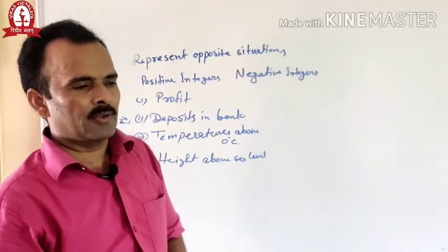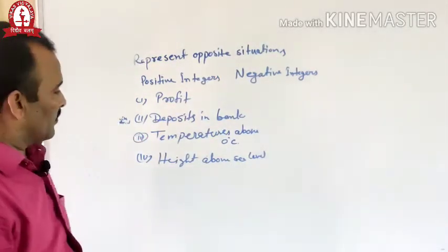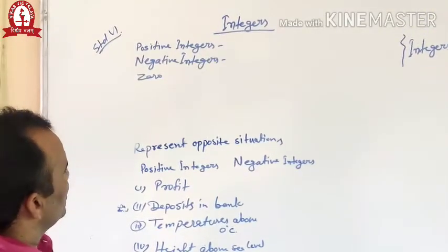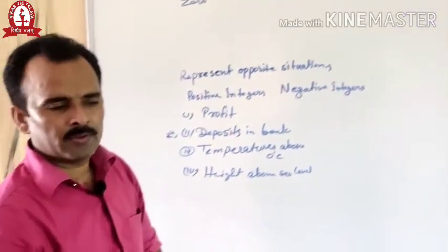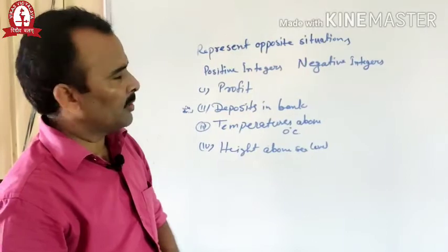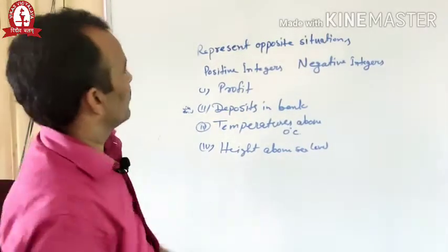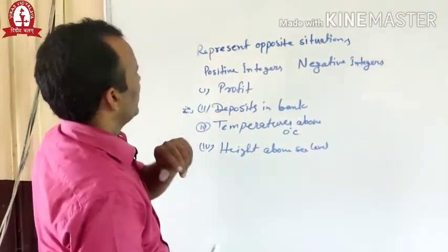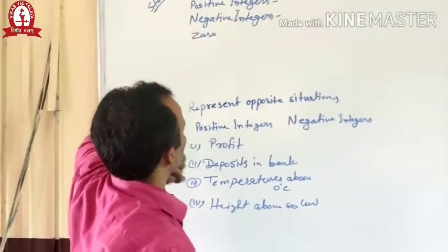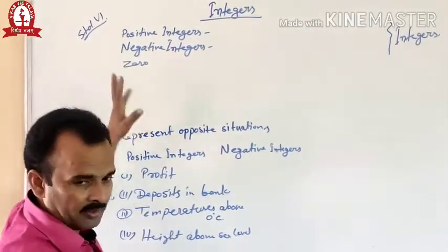Good morning students. Once again I want to explain integers. First of all, let's understand what integers are. In integers there are three types of numbers included: first, positive integers; second, negative integers; and zero.